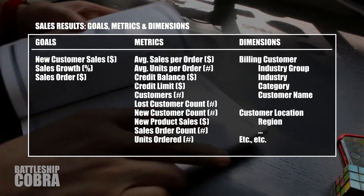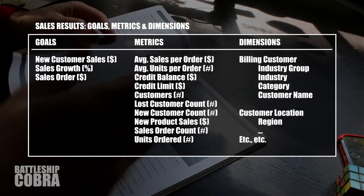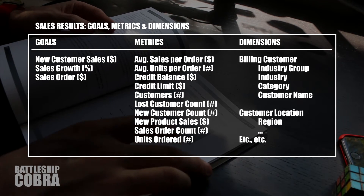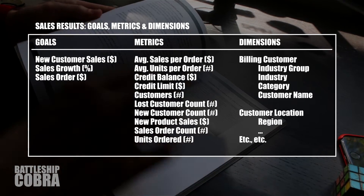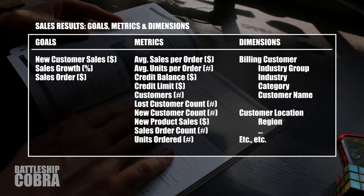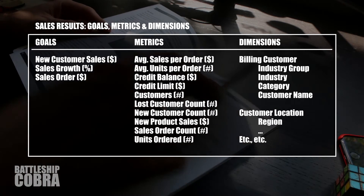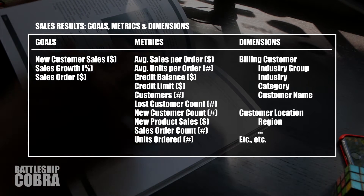A goal is a target — something you're working on. In the Sales Results section, the goals are: New Customer Sales (dollar value), Sales Growth, and Sales Order (dollar value of your total orders). The goals are what you want to drive towards.